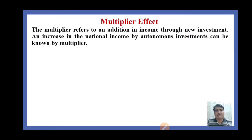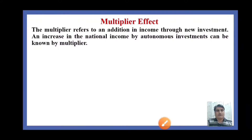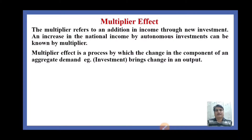First of all, what is the multiplier? The multiplier refers to an addition in income through new investment. It means when we make an investment, how does real GDP rise. An increase in national income by autonomous investment can be known by the multiplier. Autonomous investment means the investment which is independent of the level of income — whatever the level of income, the investment is not affected.